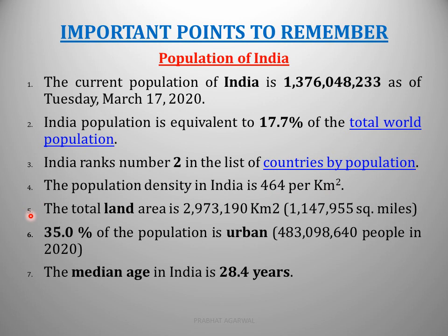Point number five: the total land area of India is 29,73,190 square kilometers, also given in miles — it will be better to learn the square kilometer figure. Point number six: 35% of the population is urban.